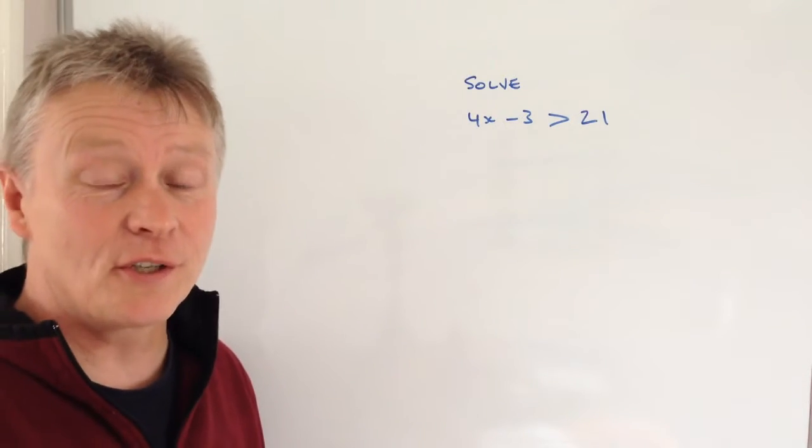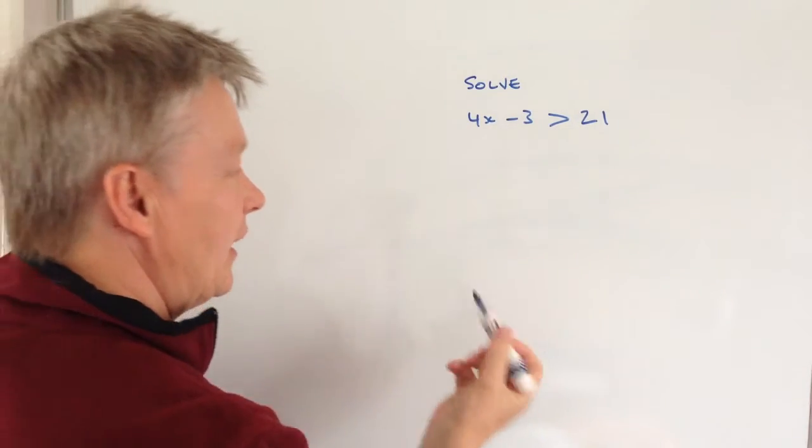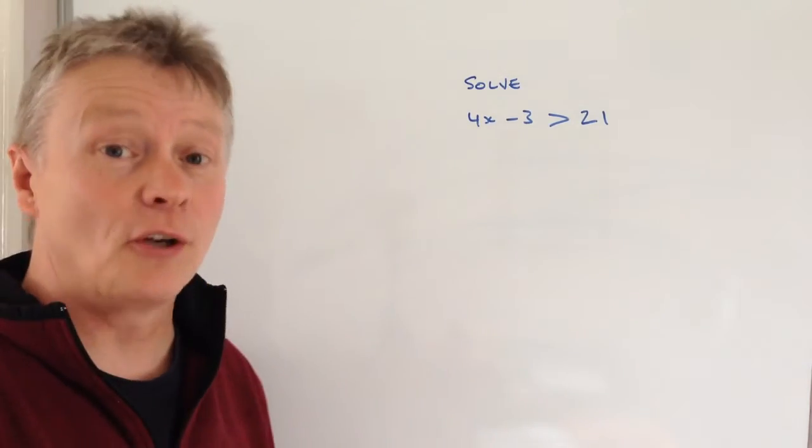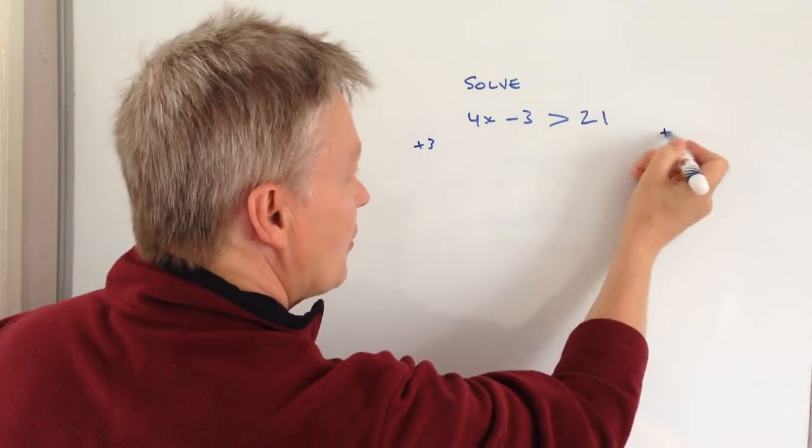So what they're asking us to do is to find the value of x. Well, if you imagine that this is an equals sign here, then what we would do to solve a normal linear equation is add 3 to both sides.